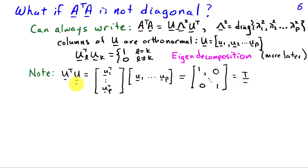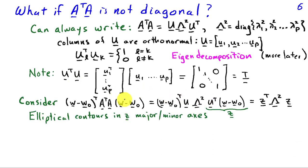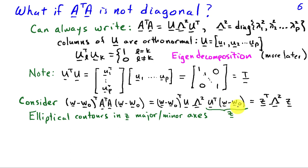Getting back to understanding our squared error cost function when AᵀA is not diagonal: I take the quadratic term and replace AᵀA with the decomposition UΛ²Uᵀ. Grouping Uᵀ with (w − w₀) and calling that new vector z = Uᵀ(w − w₀), the left-hand side becomes zᵀ. So the quadratic term in the squared error rewrites as zᵀΛ²z. Since Λ is diagonal, requiring this to be constant yields the equation for an ellipse.